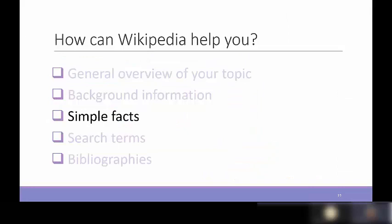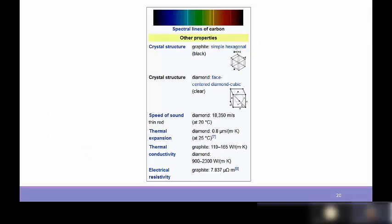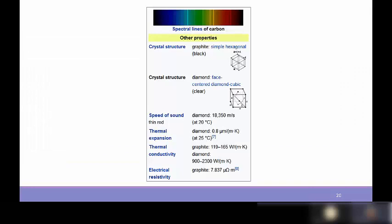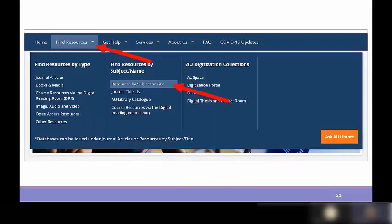If you're looking up relatively uncontroversial, simple facts, Wikipedia is just fine. For example, the crystal structure of carbon is well known and not disputed — it's considered factual. But when referencing in papers, you may want to go to a more academic source to verify. If you want to verify things found in Wikipedia, it's a good idea to do so in an external source.